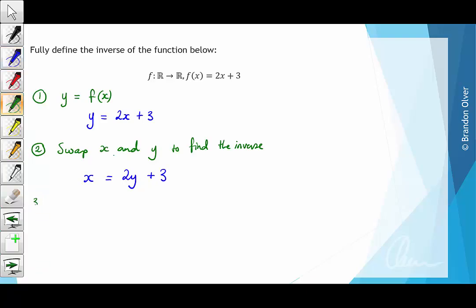The third step is to solve for y. For this equation, we're going to subtract 3 from both sides, and that gives us 2y equals x minus 3. Then when we divide by 2, we find that y equals x over 2 minus 3 over 2.